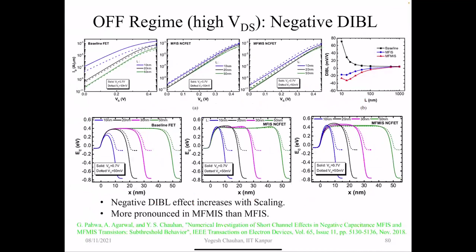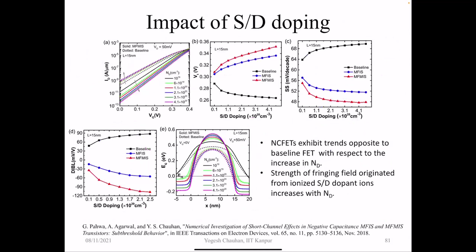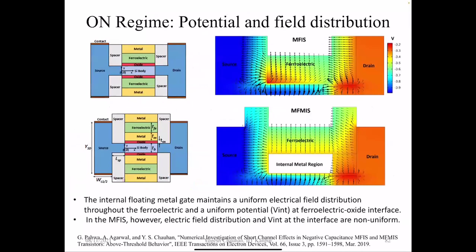We also analyzed off-region characteristics: the increase in barrier height compared to long channel as channel length decreases is why DIBL versus length gets better and better. All characteristics improve as we go to shorter channel devices. We analyzed the impact of source-drain doping: as we increase source-drain doping, fringing improves, giving an increase in barrier height. We examined the potential and field distribution in more detail and justified that these trends are real in NCFET devices.